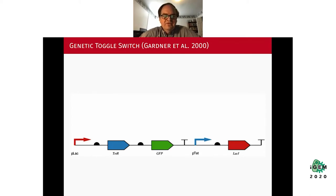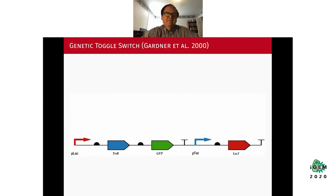For those of you maybe new to synthetic biology, I want to explain that one of the first synthetic biology circuits was the genetic toggle switch, designed and published in Science in the year 2000. This circuit acts like a switch where you can turn it on and off. It's built out of a DNA sequence composed of two transcriptional units: one begins with the pLac promoter which initiates transcription for the TetR and GFP genes, and then the pTet promoter which initiates transcription for LacI.